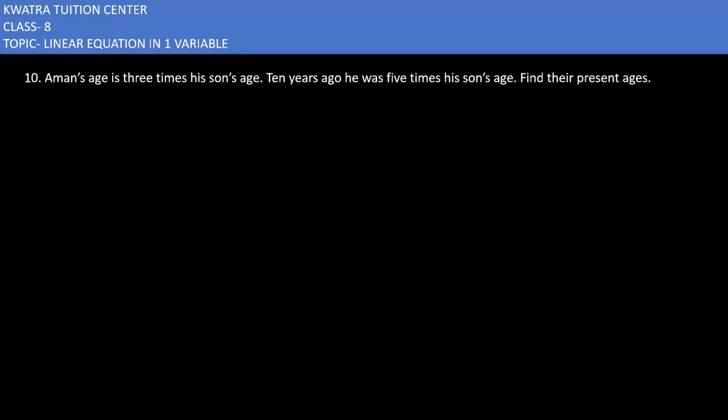Let's start with the 10th one. It says Aman's age is 3 times sun's age. Now, if we notice here, we will notice that Aman's age is dependent on sun's age. So, what we have to do is take the sun's age. Let the present age of sun be x.